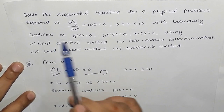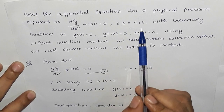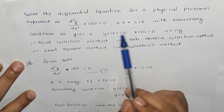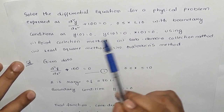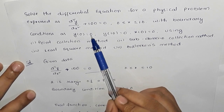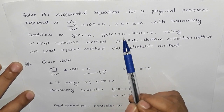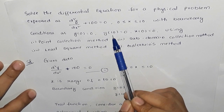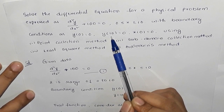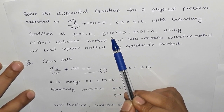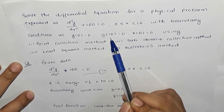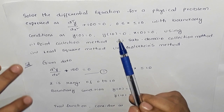So the governing equation has limits 0 to 10, with x ranging from 0 to 10. The boundary conditions are y(0) = 0 and y(10) = 0. Based on these two boundary conditions, we will select a trial function.